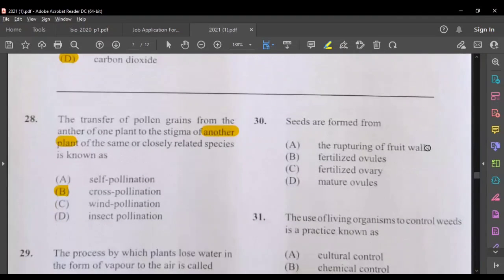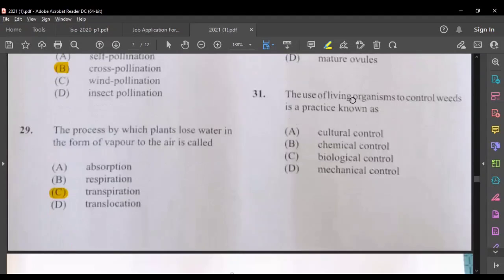Question 30, seeds are formed from rupturing of fruit walls, that would not be the answer. Fertilized ovules, fertilized ovary, mature ovules. So fertilized ovules will develop into seeds. The use of living organisms to control weed is a practice known as, once you're using living organisms, that would be biological control.